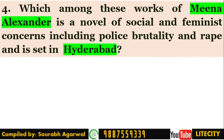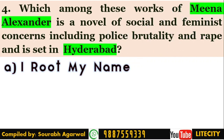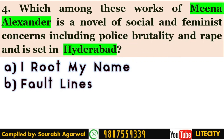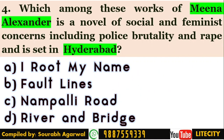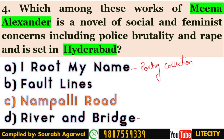Our next question is related with Indo-Anglian literature: which among these works of Meena Alexander is a novel of social and feminist concerns, including police brutality and rape, set in Hyderabad? Options are I Root My Name, Fault Lines, Nampali Road, and River and Bridge. I Root My Name and River and Bridge are poetry collections. Fault Lines is her first novel relating personal experiences. The right answer is Nampali Road.